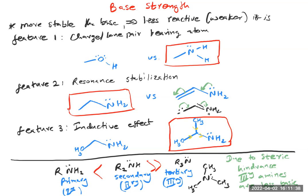This summarizes the factors affecting base strength. Feature One is more important than Feature Two, Feature Two is more important than Feature Three, and so forth — the same priority order applies here. I hope this helped — I'll see you guys later in class, bye everybody.